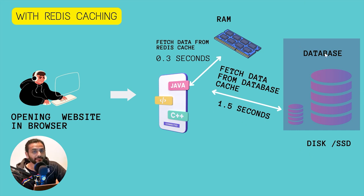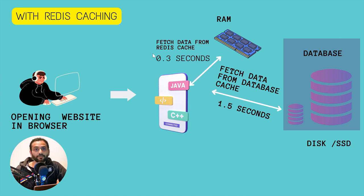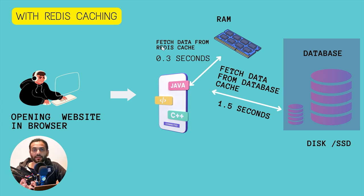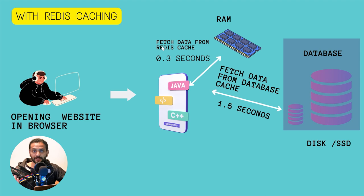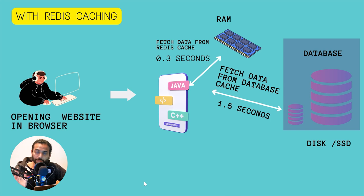Instead of reading data from the SSD or hard drive, Redis reads from RAM — just like how RAM works in your computer. If you have 8 GB or 16 GB of RAM and 1 TB of hard drive, RAM is fast memory but can't hold as much data. So we store the most commonly requested data on RAM. With Redis cache enabled, instead of fetching from the disk-based database cache, it fetches from RAM — bringing the time down to around 0.3 seconds, significantly improving website speed especially for dynamic websites and website backends.